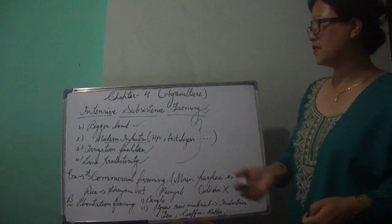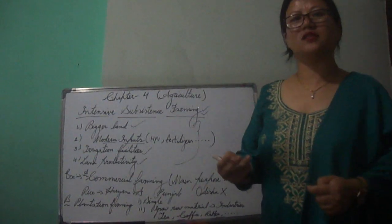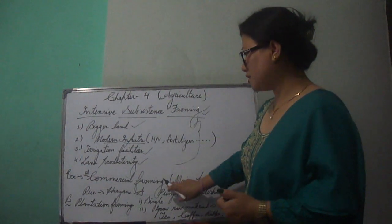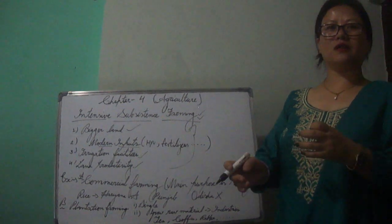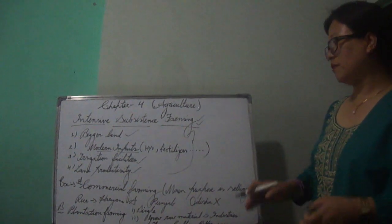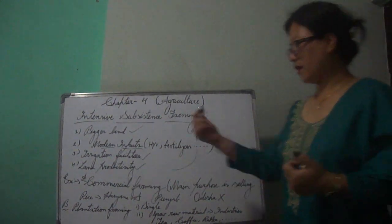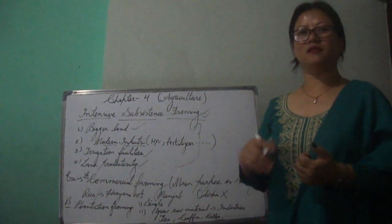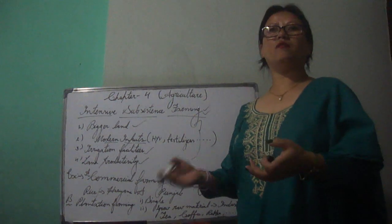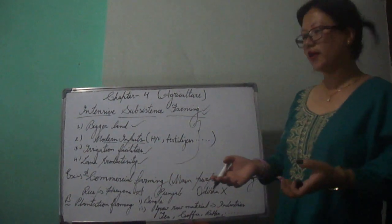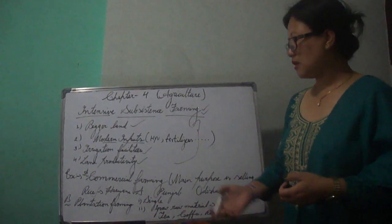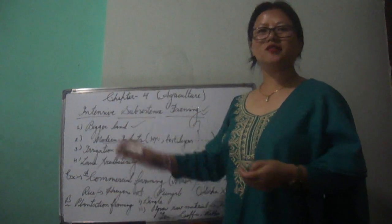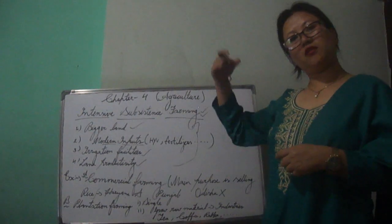There are two types of intensive subsistence farming. The first is commercial farming, where the main purpose of growing crops is selling. For example, if a farmer in Punjab or Haryana grows rice — where the common staple food is chapati — the main purpose of growing rice is for selling, making rice a commercial crop in those states.